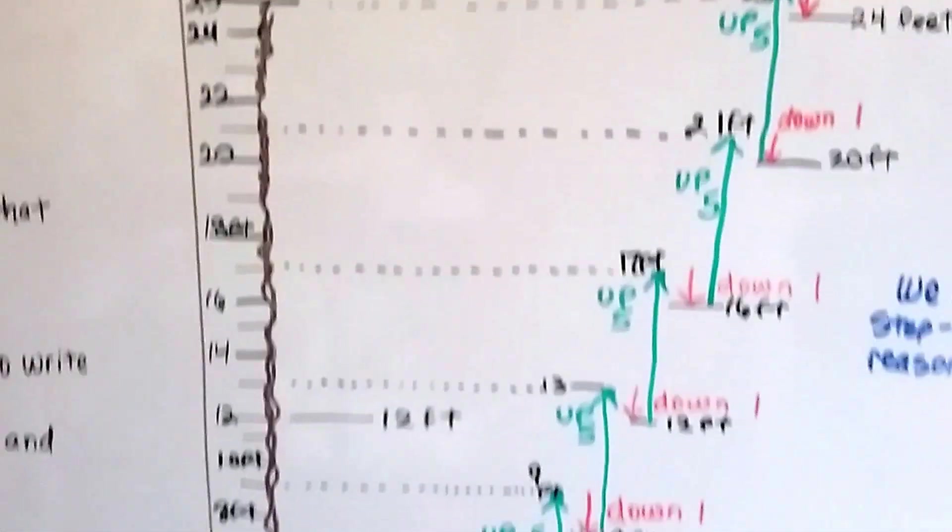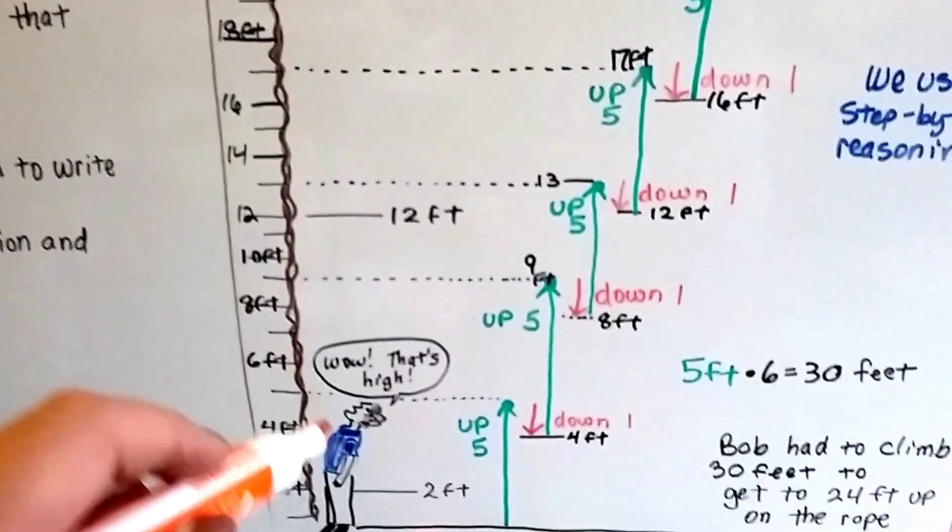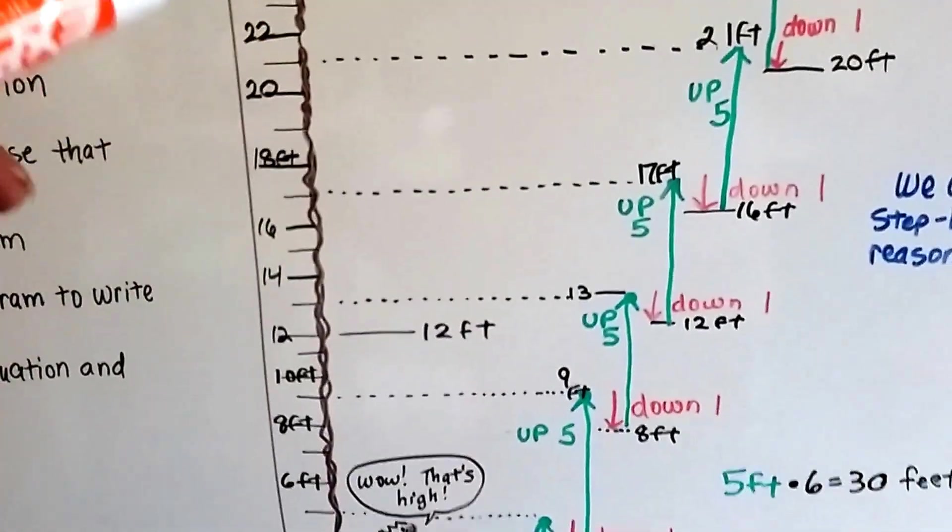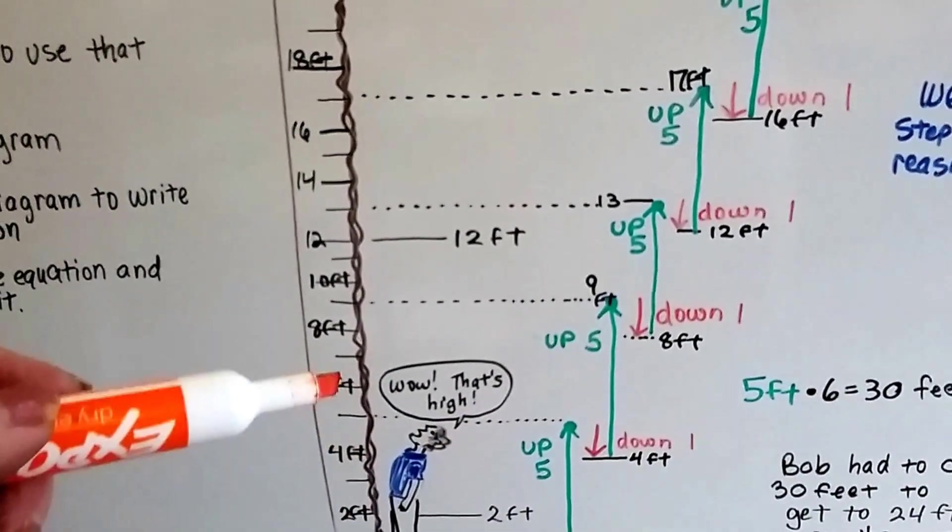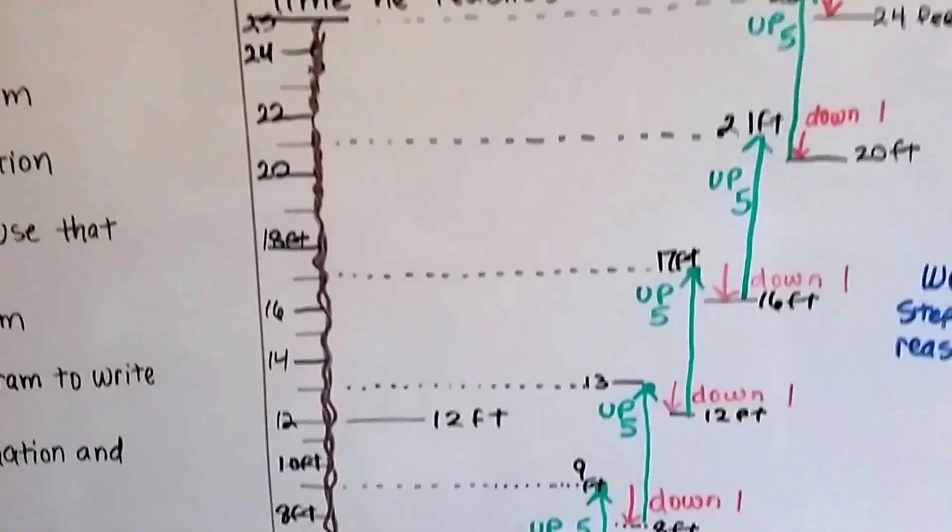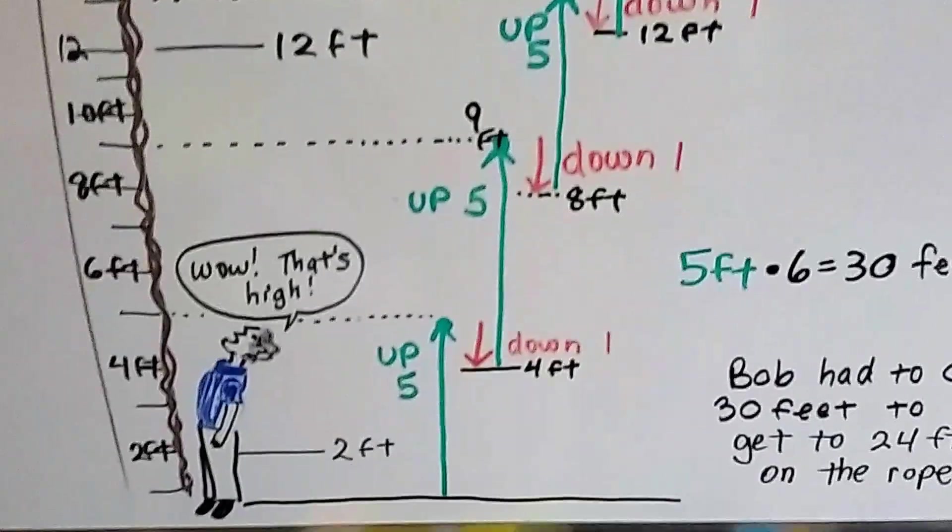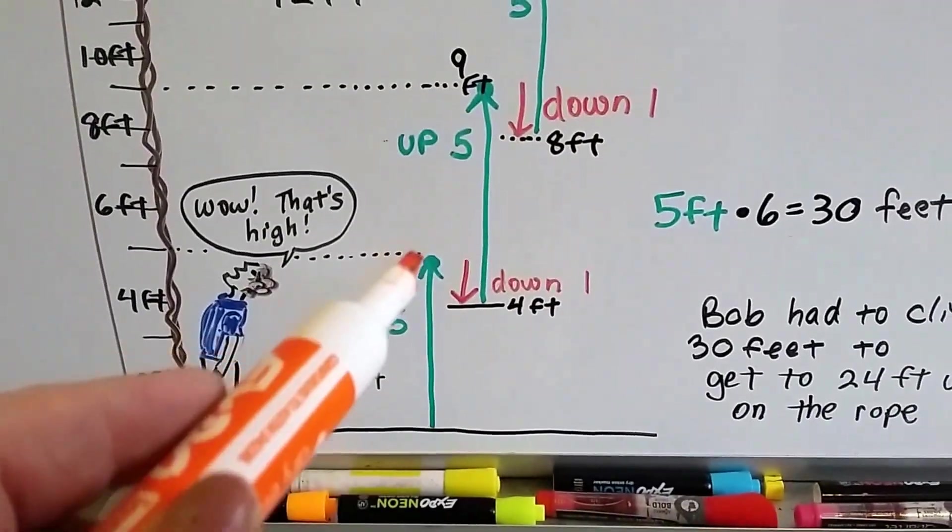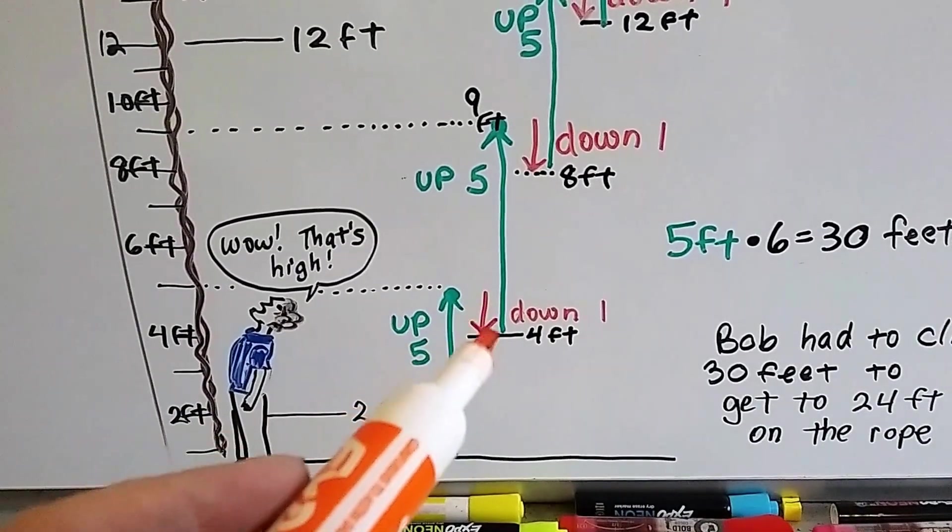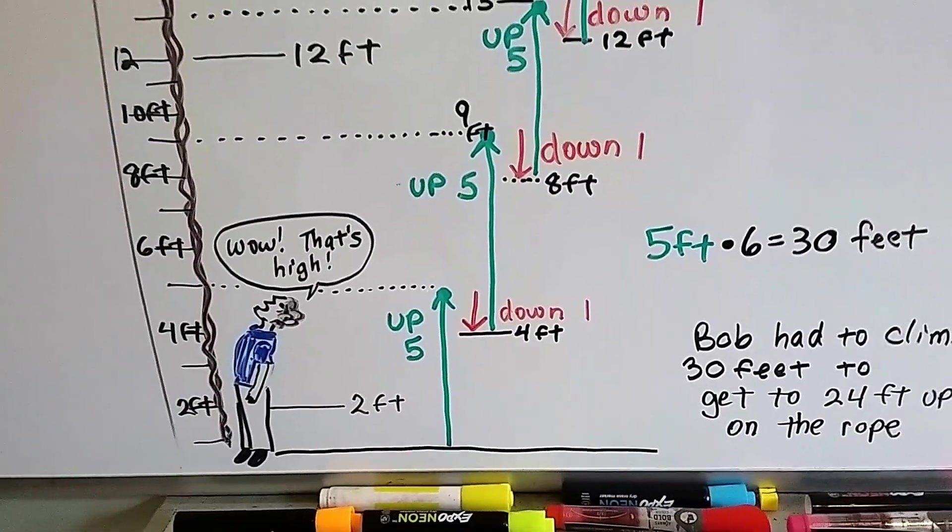So I drew a diagram, and I made a rope. I even made Bob. So I put increments on the rope to count. I did it by twos. Here's two feet, four feet, six feet, eight feet. And it goes all the way up to 24, and then there's 25 feet. So I drew a green line to show climbing for positive, and a red line arrow down for every time he slips down.